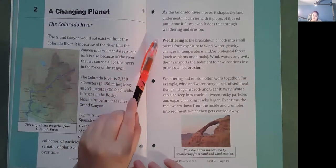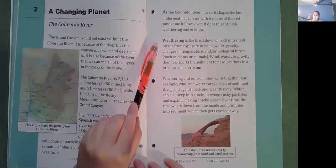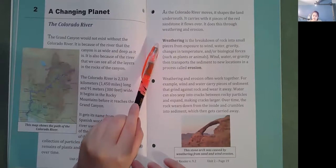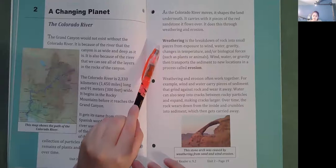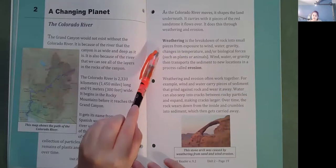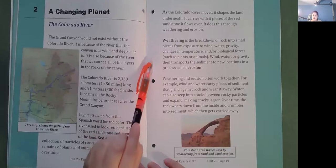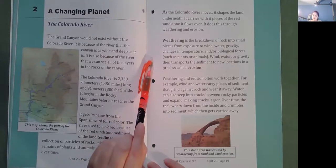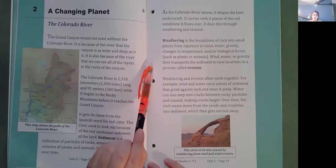Weathering is the breakdown of rock into small pieces from exposure to wind, water, gravity, changes in temperature, and or biological forces such as plants or animals. Wind, water, or gravity then transports the sediment to new locations in a process called erosion.